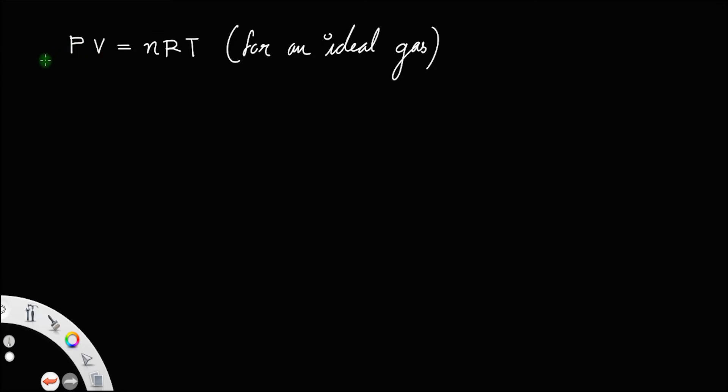Suppose the pressure is constant. We have change in PV is equal to change in nRT, which means since the pressure is constant,